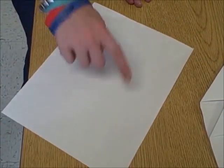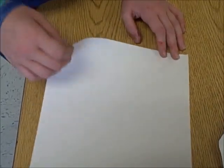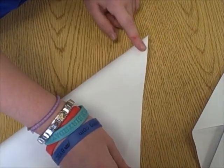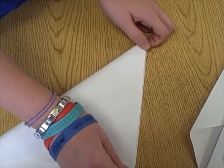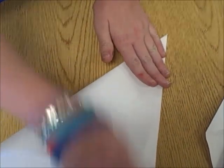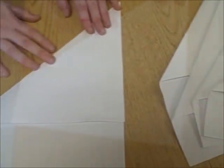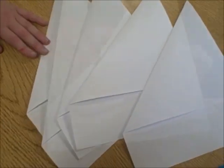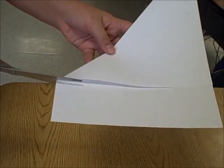First thing you're going to do is turn this rectangle into a square. To do that, you take corner to edge and make sure that it's lined up at the top right here, and make a sharp crease. You're going to need to do this for all six pieces of paper, and then you're going to cut off the extra paper at the bottom of your fold.